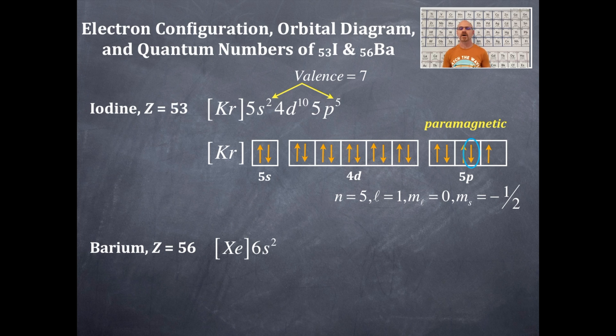Now write out the orbital box diagram of barium also thereafter. So this is noble gas notation. There's xenon and this is 6s. And now I'm going to place the electrons where they go. That's one up, then one down. That's the maximum number of electrons I can fit in there. They are anti-parallel.